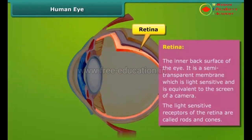Retina: Retina is a light-sensitive tissue that lines the back of the eye. It is a semi-transparent membrane and is equivalent to the screen of a camera. The eye lens forms an inverted and real image of the object on the retina. The light-sensitive receptors of the retina are called rods and cones.